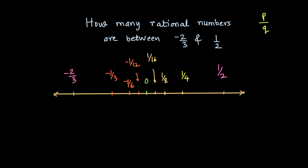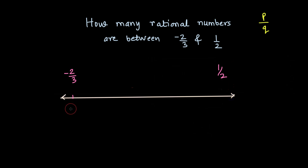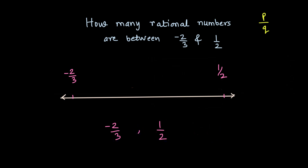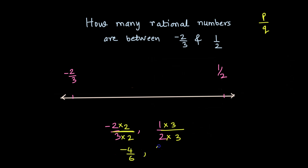Let's explore with the same example. I'll draw the number line again and plot -2/3 and 1/2. To find how many rational numbers lie between them, let's make their denominators the same. Multiplying -2/3 by 2 in numerator and denominator, and multiplying 1/2 by 3 in numerator and denominator, I get equivalent fractions: -4/6 and 3/6.